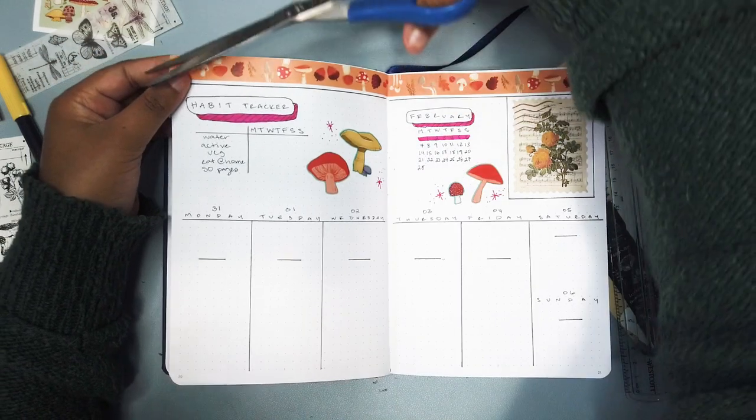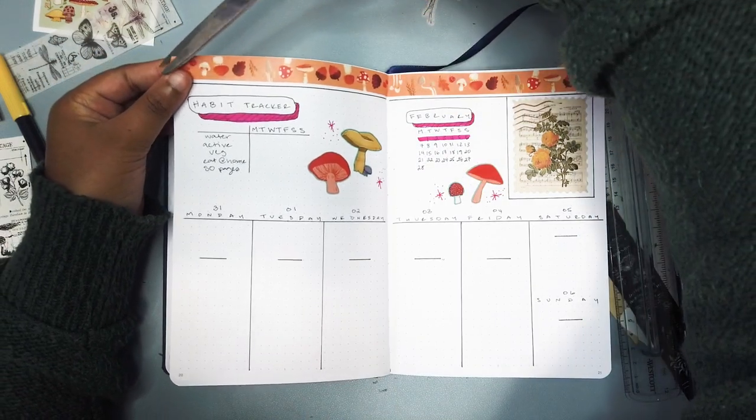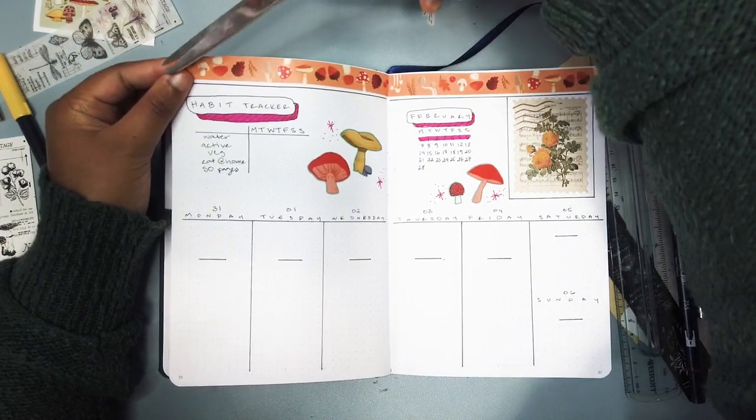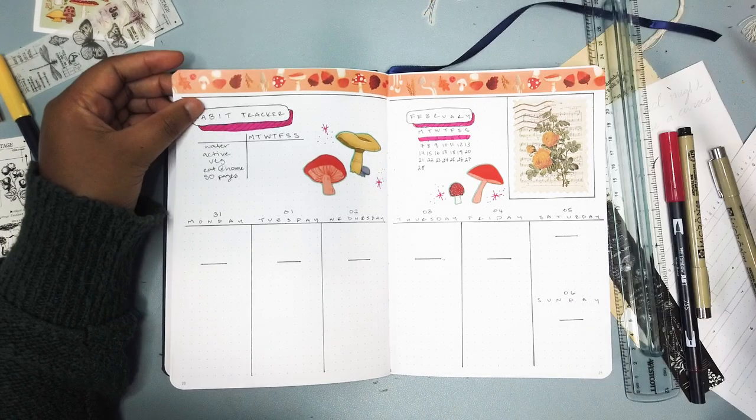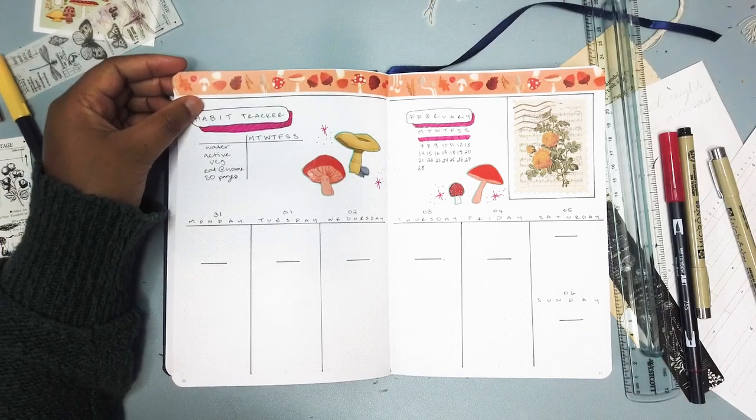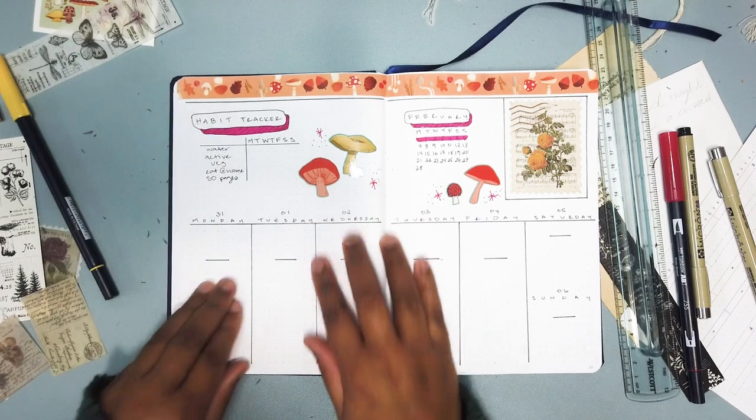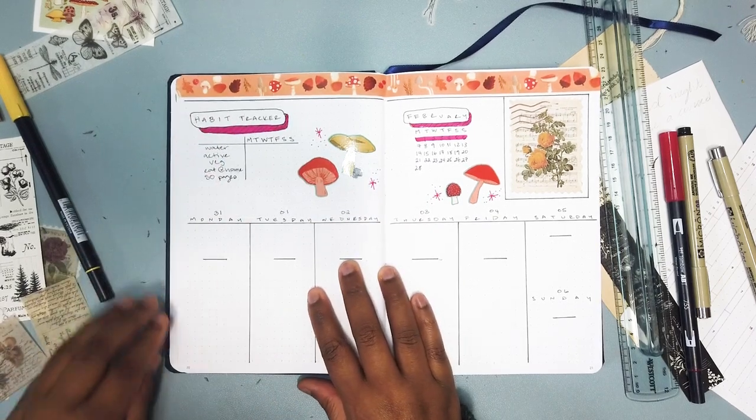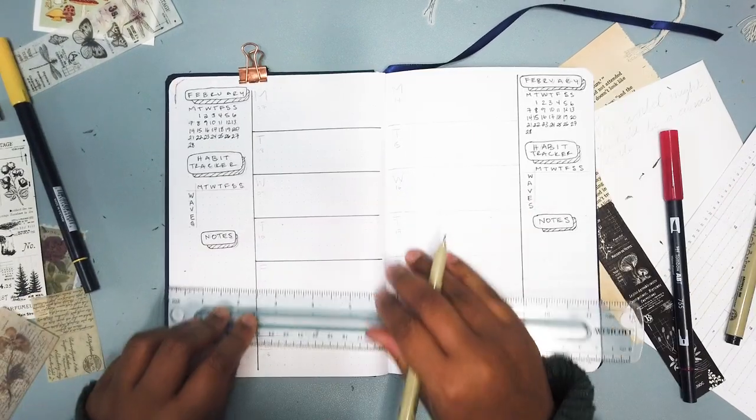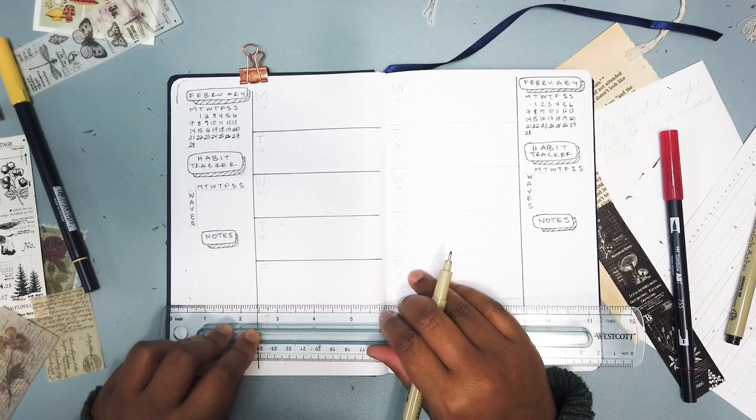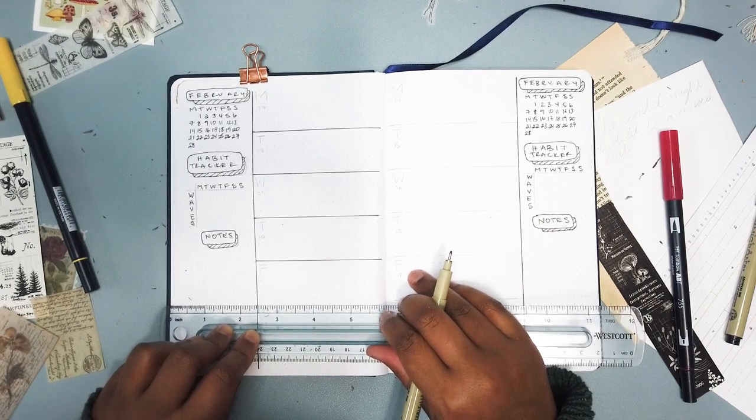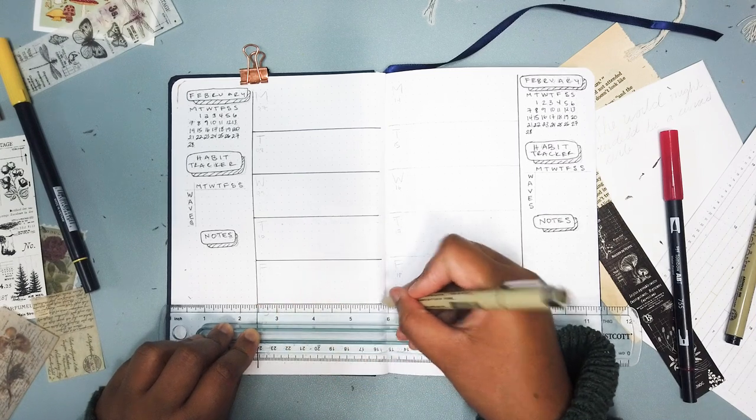I put this washi tape at the top again which I actually did like. These spreads I'm very at odds with. I don't think I like them as much. I wanted to really lean into the stickers because I have such a large sticker collection but then I kind of missed some of the extra drawing that I had done previously. So I might have to find a way to incorporate that when I do my March spread.